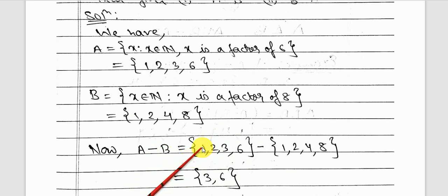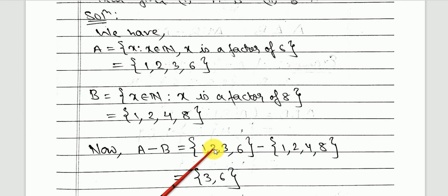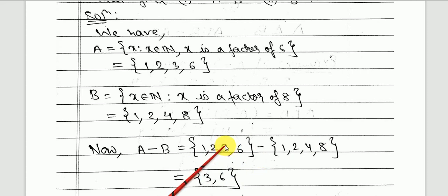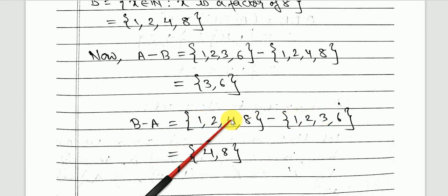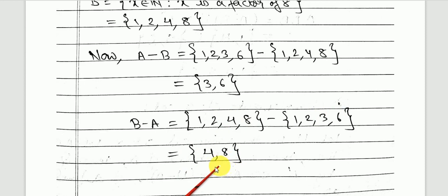1 is in both A and B, so we do not write it. 2 is in both, so we do not write it. 3 is only in A, so we write 3. 6 is only in A, so we write 6. Therefore A minus B = {3, 6}. For B minus A: 1 and 2 are common, so we skip them. 4 is only in B, so we write 4. 8 is only in B, so we write 8. Therefore B minus A = {4, 8}.